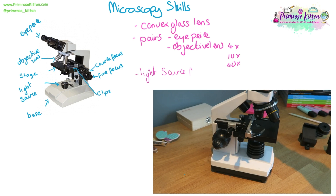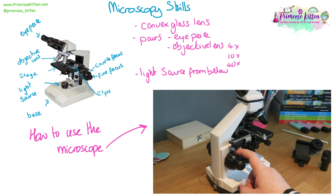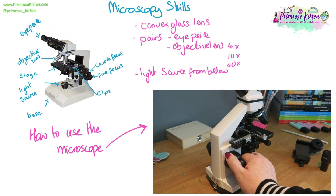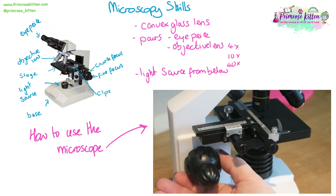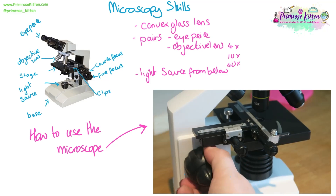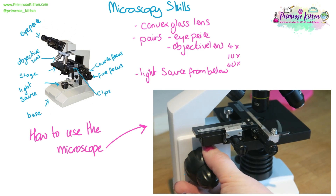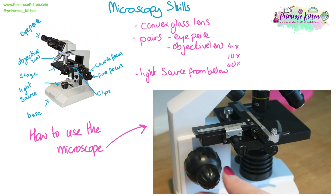You will need a light source coming from below so that you can actually visualise things, otherwise it is going to be very hard to see anything. There are two focusing dials: the big one is the coarse focusing dial and the small one is the fine focusing dial, and as you move these the stage will move up and down. The coarse focus will move it in quite big chunks quite quickly, whereas the fine focus will move in very small chunks very slowly.